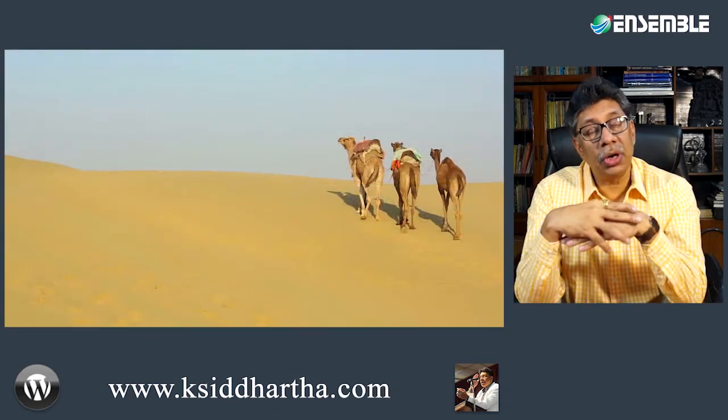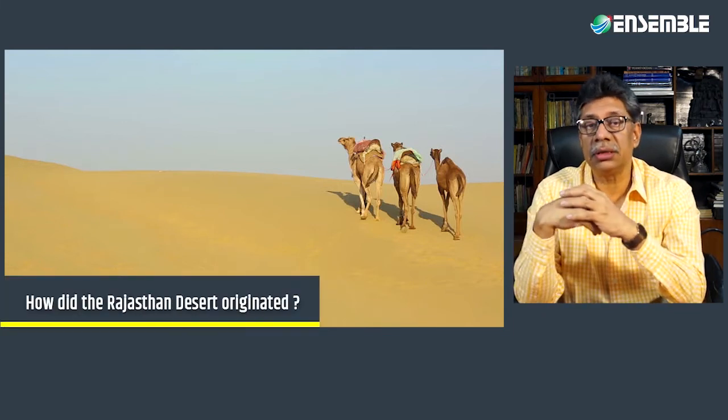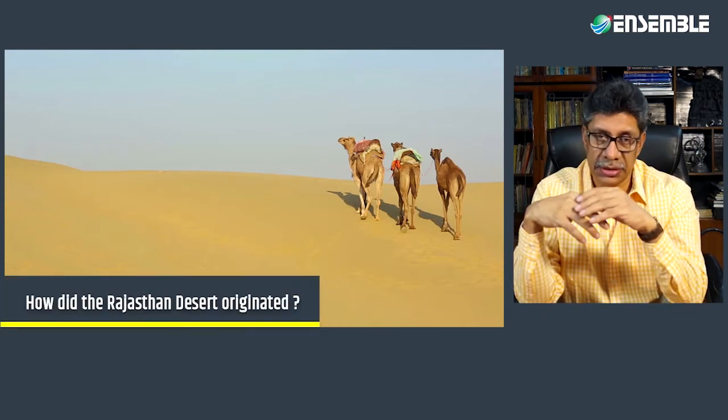We are concerned about the origin of the desert — that is going to be our prime concern. How is it that the Rajasthan desert originated? Most people think it is a climatic desert, but that is not all there is to the Thar desert. It is a climatic desert, it is a physiographic desert, it is a geological desert as well, and it goes on to comprise everything.